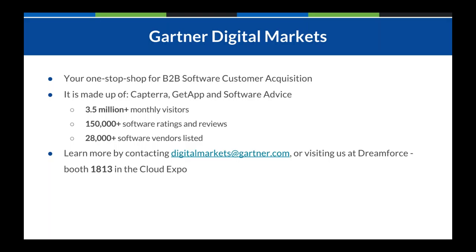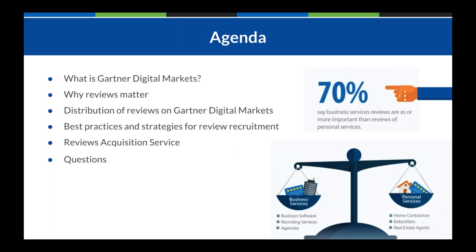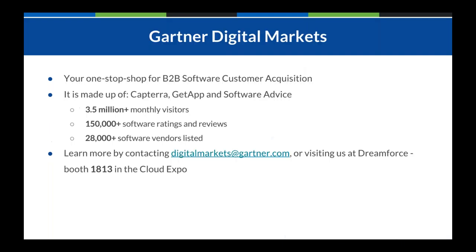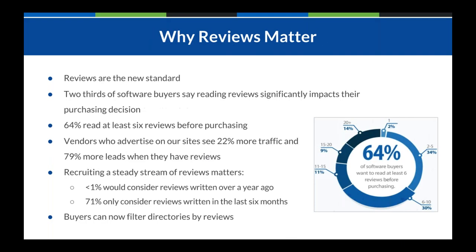Gartner Digital Markets is made up of three distinct sites: Capterra, GetApp, and Software Advice. Across the three sites, Gartner Digital Markets receives over 3.5 million monthly visitors, has more than 150,000 software ratings and reviews, and over 28,000 software vendors listed. When it comes to reviews, I'm sure you're curious why they matter.